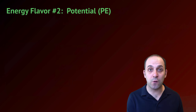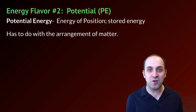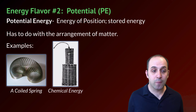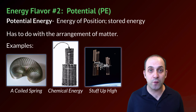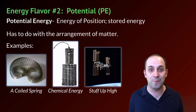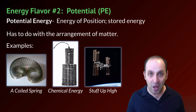The other kind of energy is potential energy, or PE. Potential energy is defined as the energy of position — I like to think of it as stored energy. It always has to do with the arrangement of matter. A coiled spring is a great example: by arranging the spring in a tight coil, we've put energy into it that can be released when it uncoils. Dynamite is a good example of chemical energy, which has to do with the arrangement of atoms, particularly the electrons and the bonds they form. And of course, objects up high always have more potential energy than objects down below.